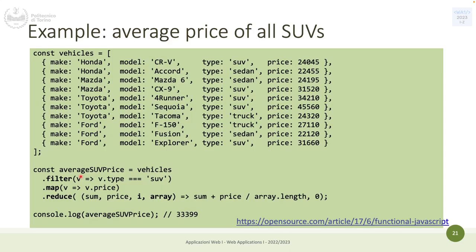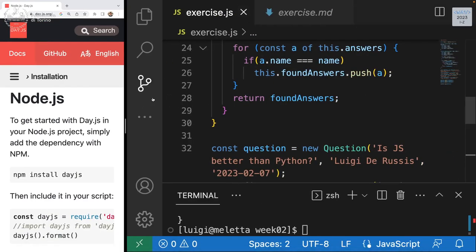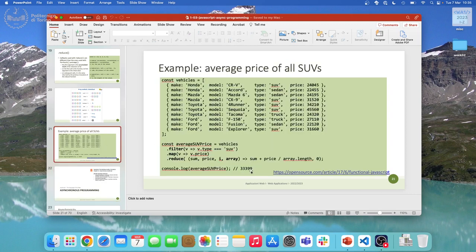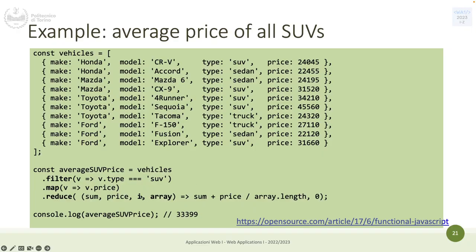Now let's implement the functional methods in the exercise. The 'find' method finds answers by author name. Using filter instead of a for-loop, we write: this.answers.filter, and in the callback — using 'answer' as the parameter — we check answer.name === name. That's it; this is functionally equivalent to the code written before with a for-loop and an if-statement.